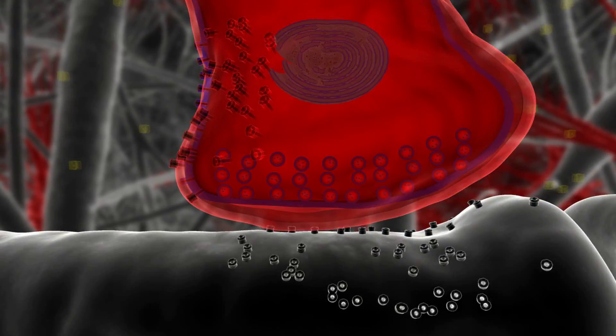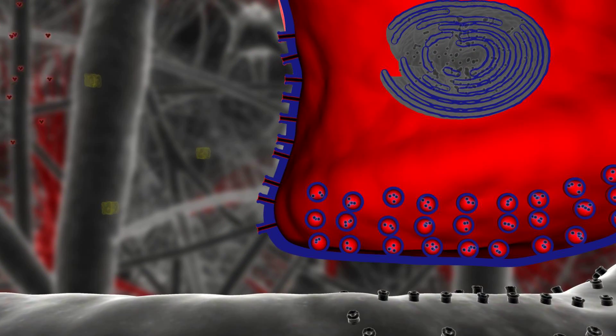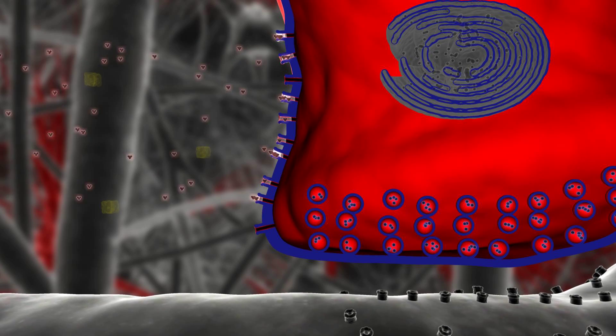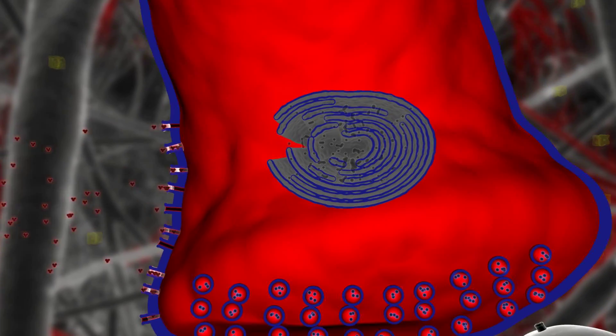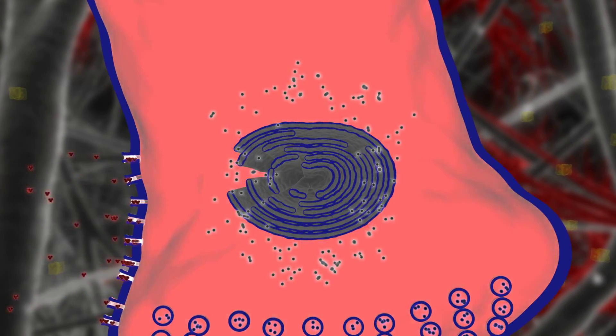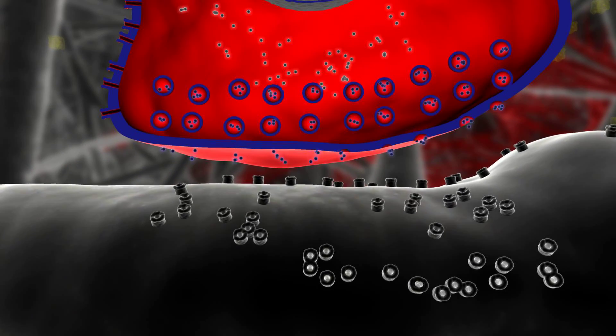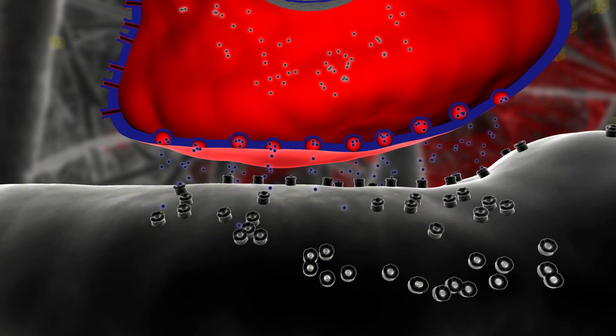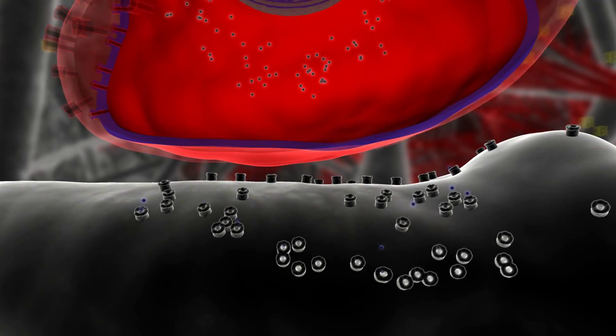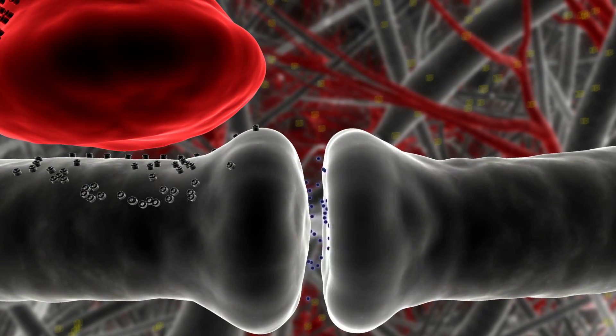We previously found that activation of particular ATP receptors in astrocytes, called P2Y1, results in elevations of astrocytic intracellular calcium, which leads to vesicular glutamate release from the astrocytes. This, in turn, activates NMDA receptors present on neighboring presynaptic terminals, which increases synaptic glutamate release.